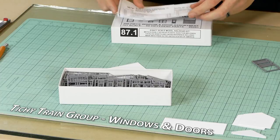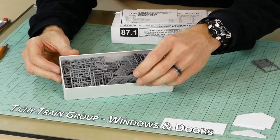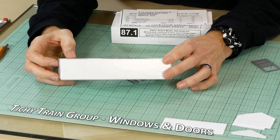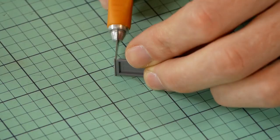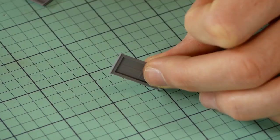It's possible to scratch build your own windows and doors however there are some fantastic commercial products available that look great. Titchy Train Group sell a wide variety of windows and doors perfect for all sorts of buildings and that's what I chose to use for this building. Like any other plastic kit, I remove the items I want from the sprue and tidy up the edges.